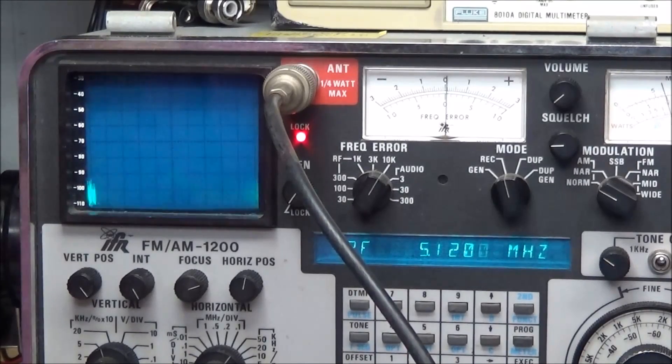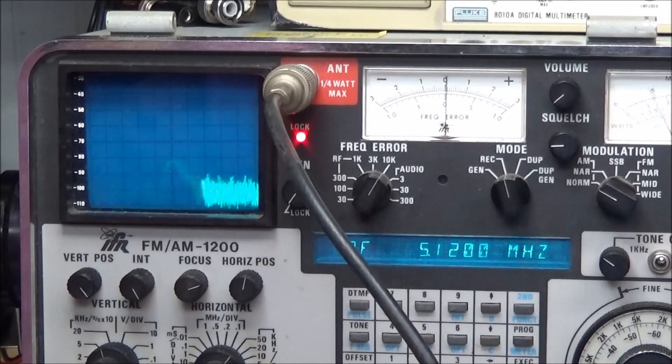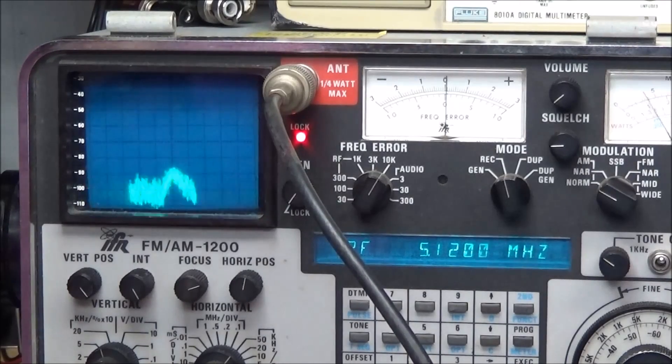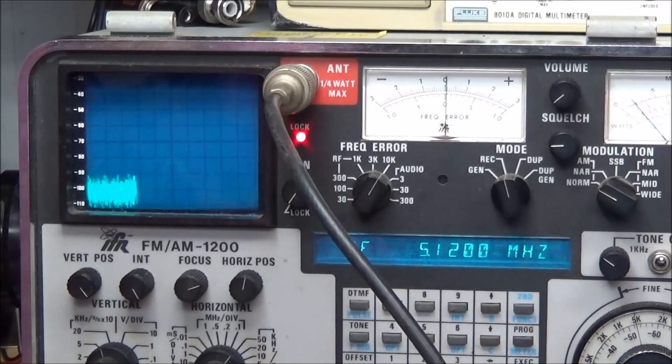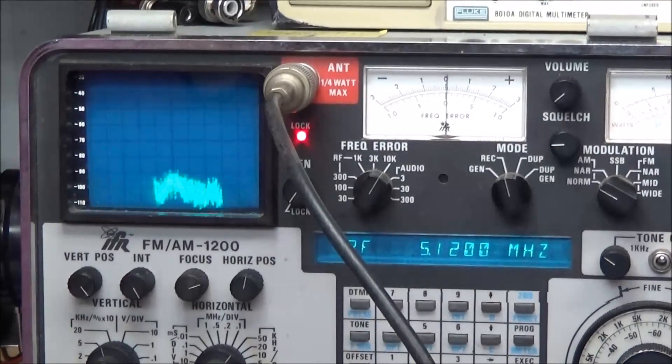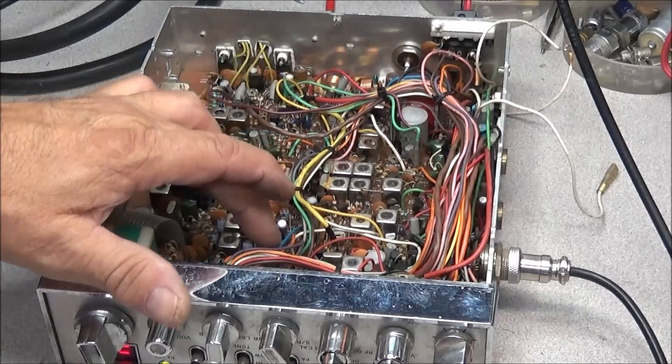And we can read our five megahertz signal. It's real weak, it's not very strong like the 10.240 signal is. So now we know we have our five megahertz coming out of the PLL circuit.